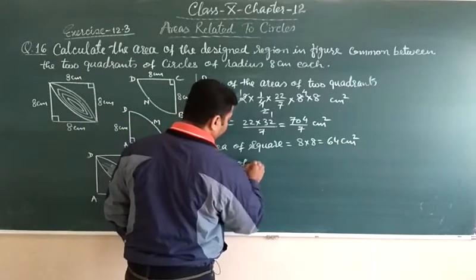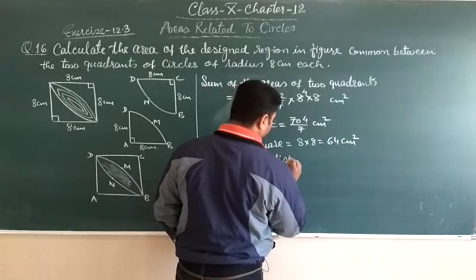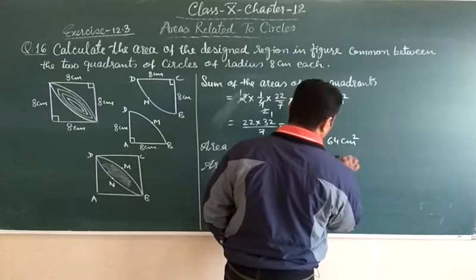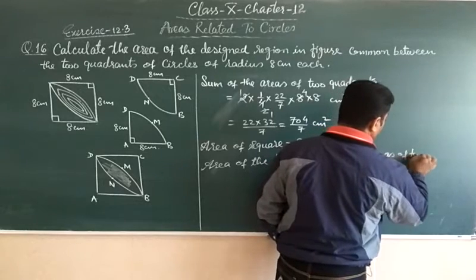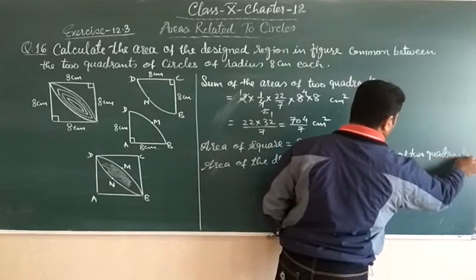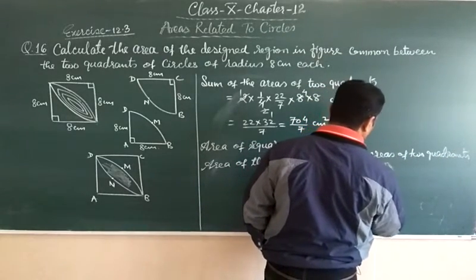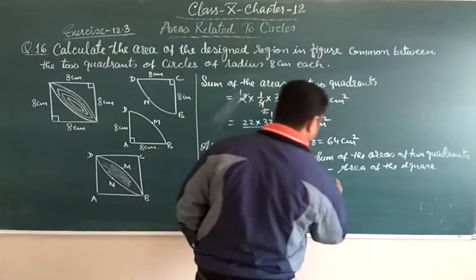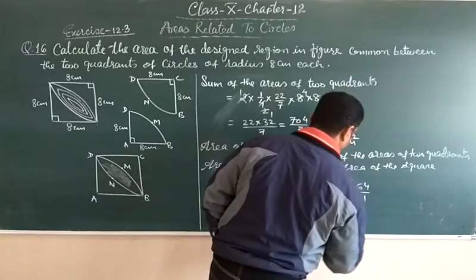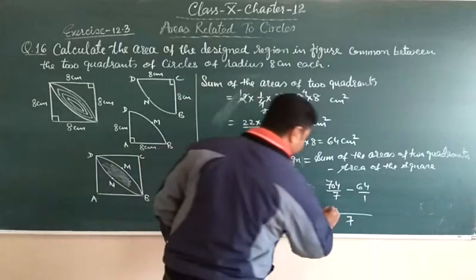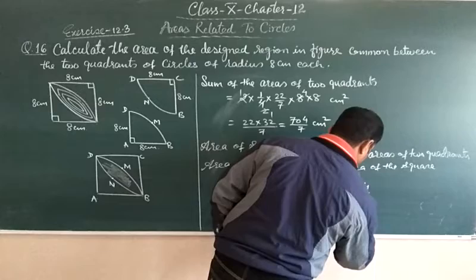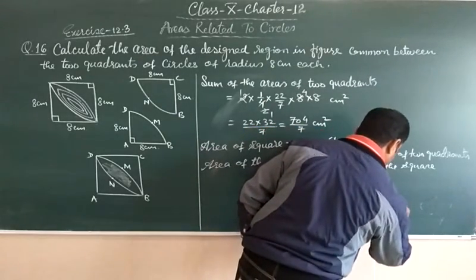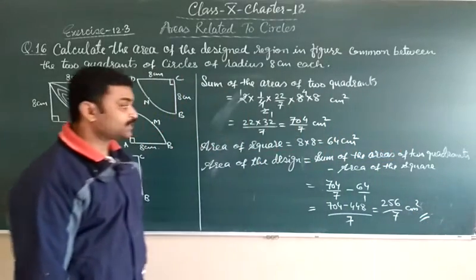Now, area of the design is equal to sum of the areas of two quadrants minus area of the square. So sum of the areas of two quadrants that means 704 upon 7 minus 64 upon 1. Taking LCM 7 is the LCM, then 704 minus 448, that is 256 upon 7 centimeter square is the answer.